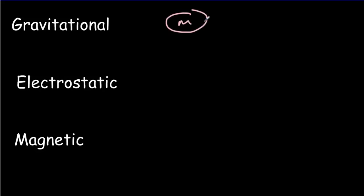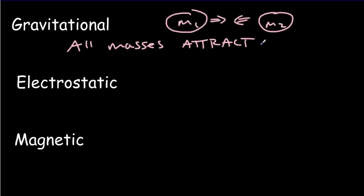The three fields we study in this course are the gravitational field, the electrostatic or electric field, and the magnetic field. The gravitational field is simply a force of attraction between masses — all masses in the universe attract. That's Newton's universal law of gravitation. This force is so small, unless you've got really big masses, that you don't usually consider it unless you're talking about things like a planet or a star. But it's present even for tiny, tiny masses.